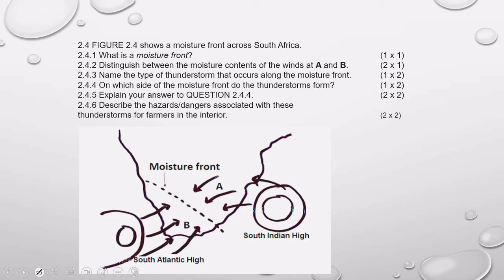This is an example of a question from a question paper. Figure 2.4 shows a moisture front across South Africa. Question 2.4.1: What is a moisture front? Remember, it is where two different air masses meet — meaning cold, dry air from the west and warm, moist air from the east — and this is a zone of instability where you often get thunderstorms and lightning.